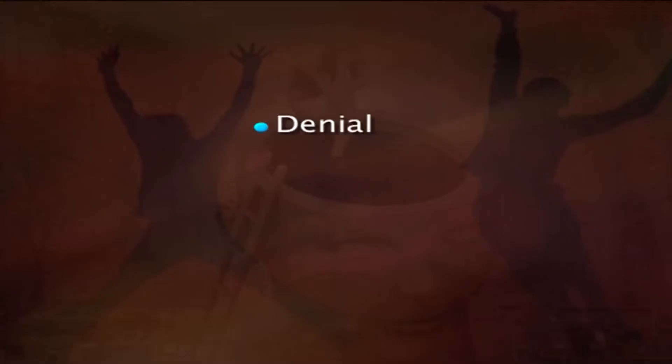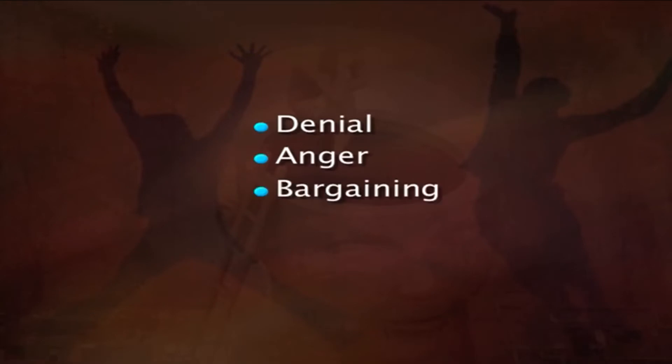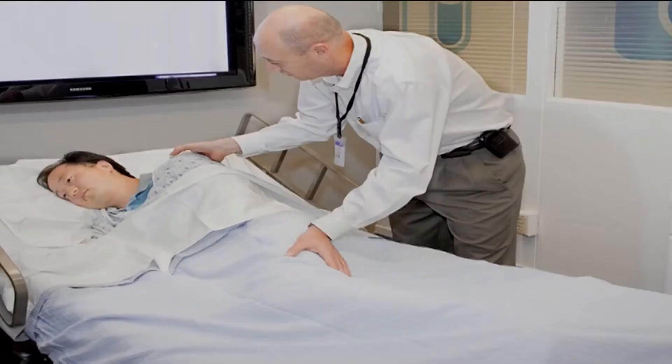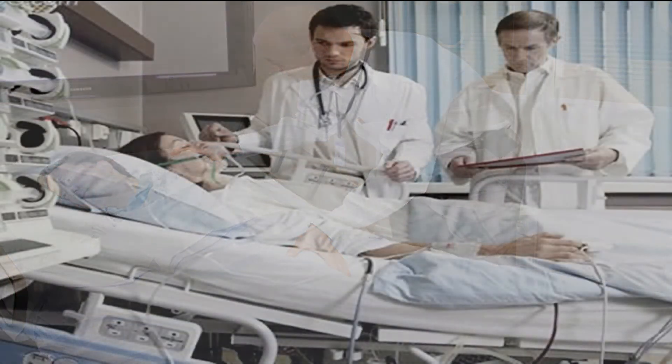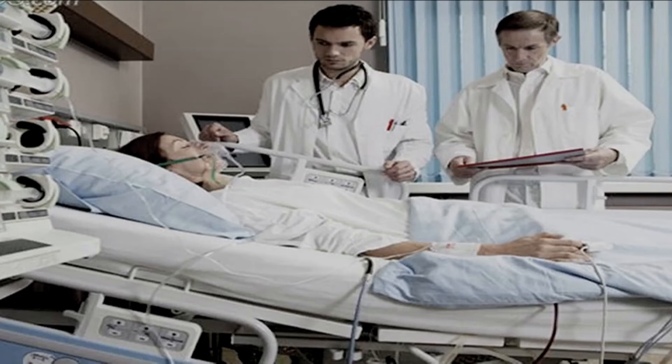As Kübler-Ross says, there are five stages a dying patient goes through: denial, anger, bargaining, depression, and finally acceptance. Healthcare professionals have to identify which stage the dying person is in and give appropriate interventions. For example, if the person is in the depression stage, the healthcare professional has to spend extra time trying to reassure the dying patient that this is a common phase and that they will overcome it.